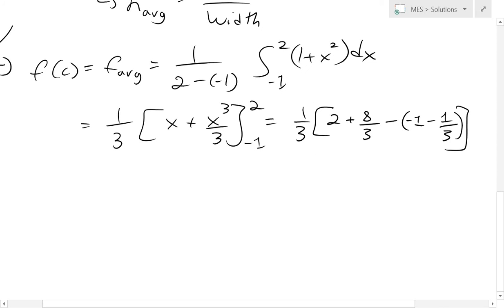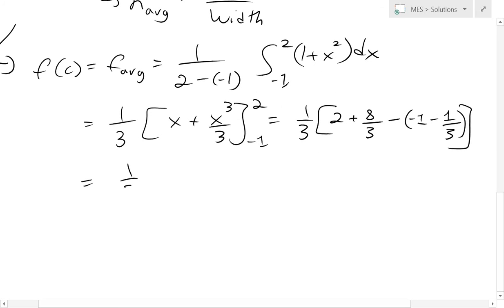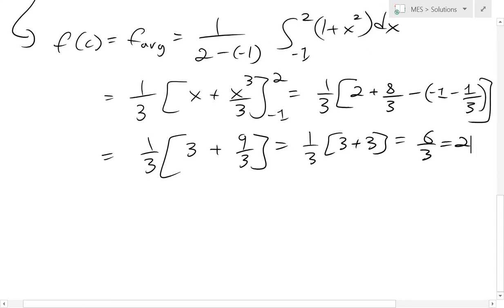So now when we simplify this even further, we get 1/3. Now this 2 - (-1), that's plus 1, so 3. Now this 8/3 - (-1/3), that's plus 1/3, so we get plus 9/3. This equals to 3, so 1/3 times (3 + 3), which equals to 6/3, which equals to 2.